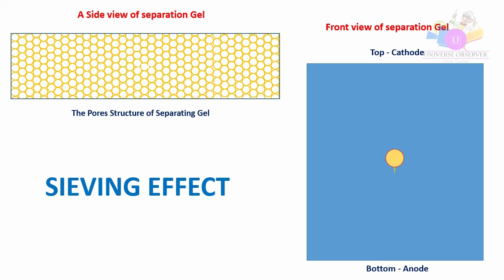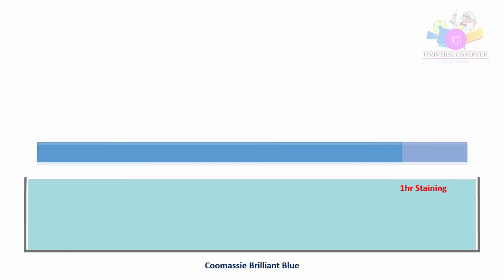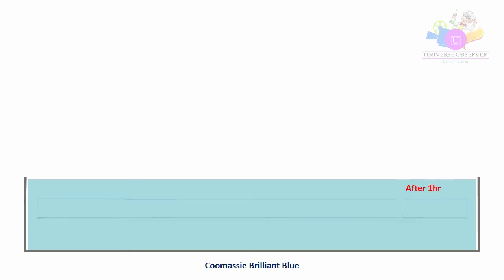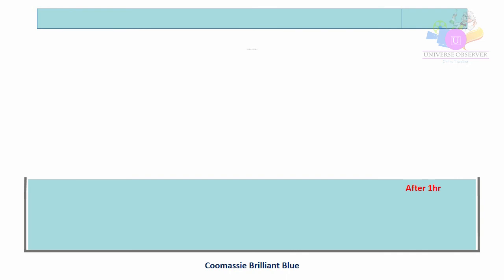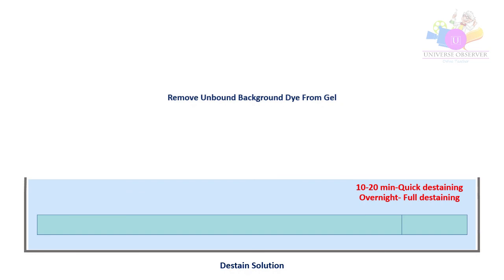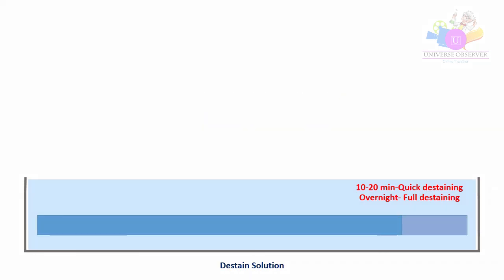When tracking dye reaches the bottom of the well, we know electrophoresis is done. At that moment, we have to remove the gel between the plastic plates and stain the gel for further observation. For staining, we use coomassie brilliant blue dye. After staining, we have to wash the gel with destaining solution. The destain solution removes unbound background dye from the gel, leaving stained proteins visible as blue bands on a clear background.